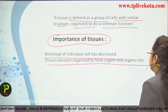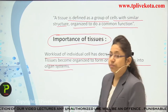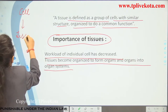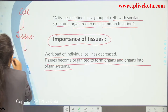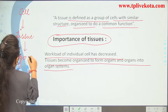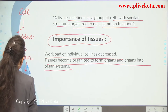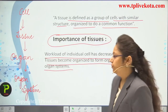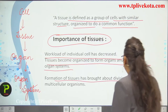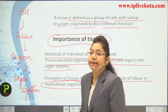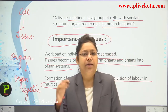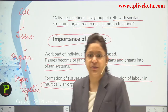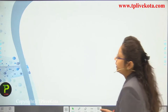Tissues become organized to form organs, and organs form the organ system. A single cell combines to form tissue, many cells form tissue, tissue forms organs, and organs form the organ system. Formation of tissues brings about division of labor in multicellular organisms — different tissues at different parts of the body perform different functions like respiration, excretion, transportation, and nutrition.